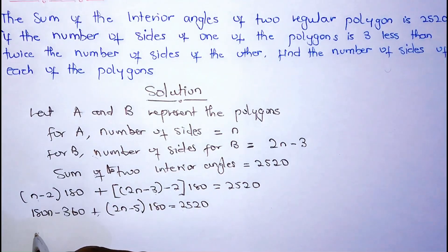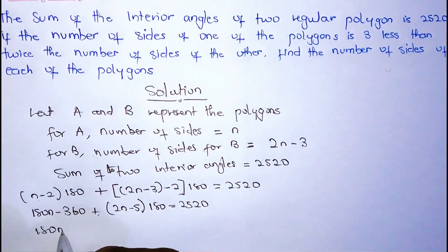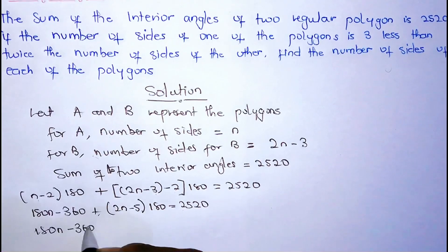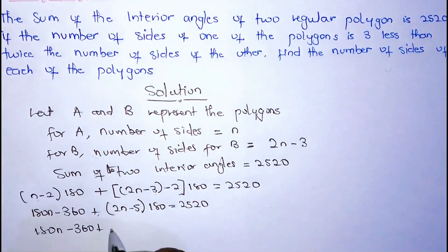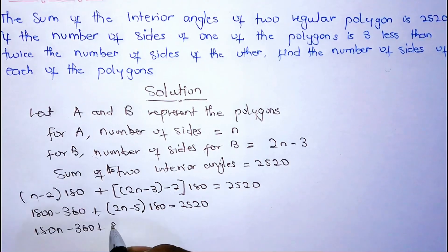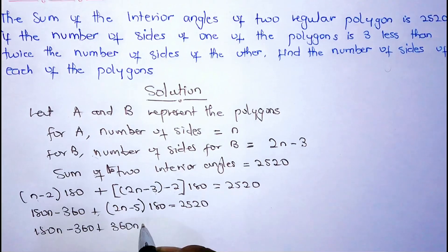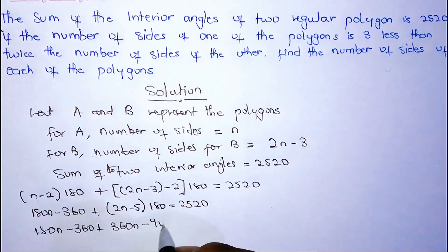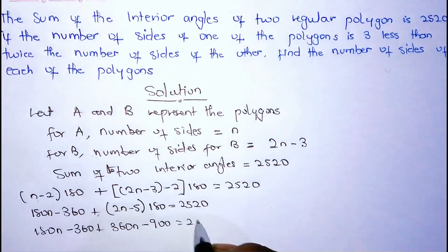We are going to get 180N minus 360 plus, so 360N, and 180 times 5 is 900, is equal to 2520.